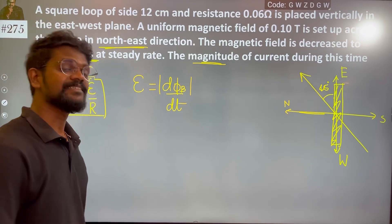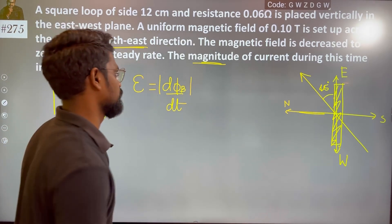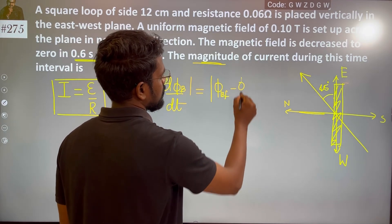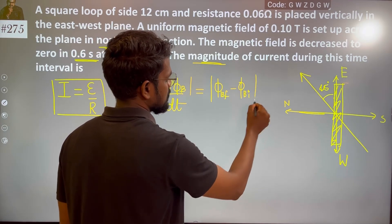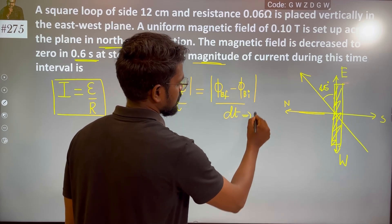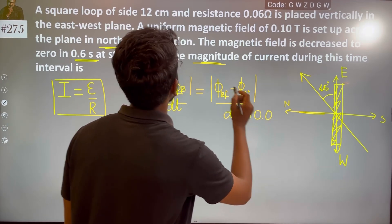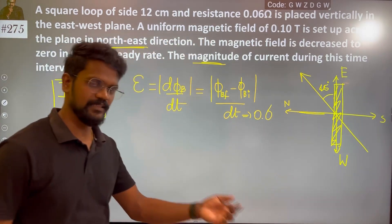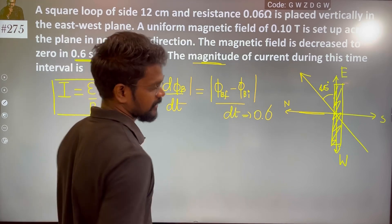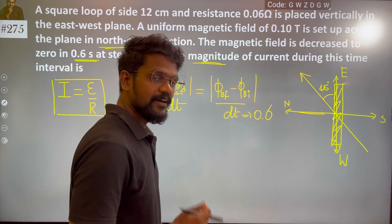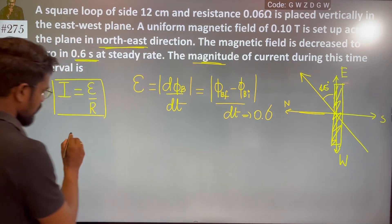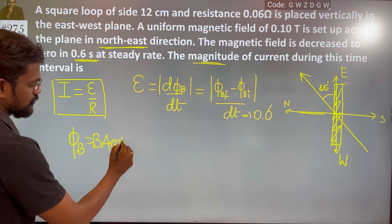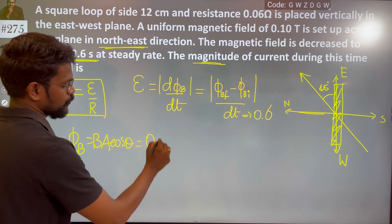The initial angle is 45 degrees and the final angle is 0 degrees. So we compute the flux — final flux minus initial flux — with respect to time. The time interval is 0.6 seconds. The magnetic flux is given by B·A·cos(θ).